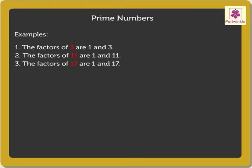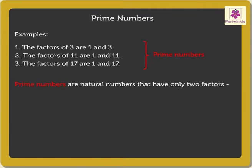All these numbers have only two factors, 1 and the number itself. Such numbers are called prime numbers. Thus, prime numbers are natural numbers that have only two factors, 1 and the number itself.